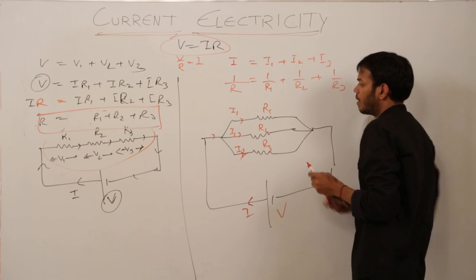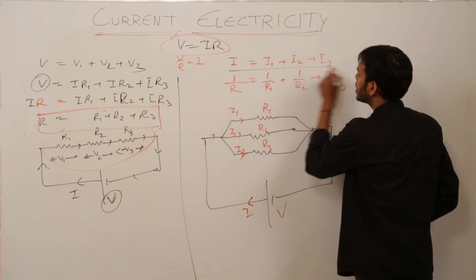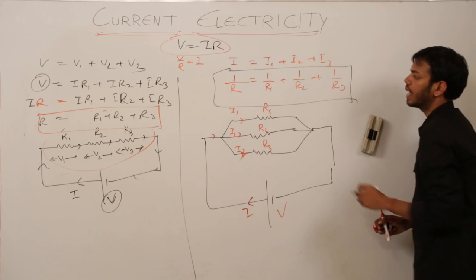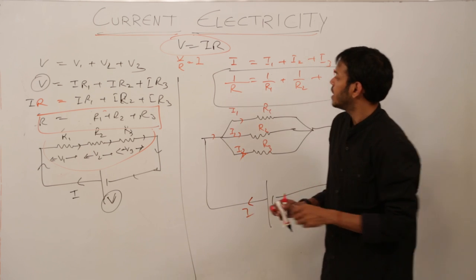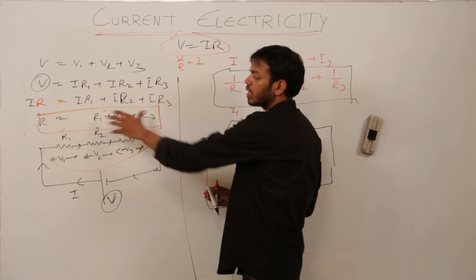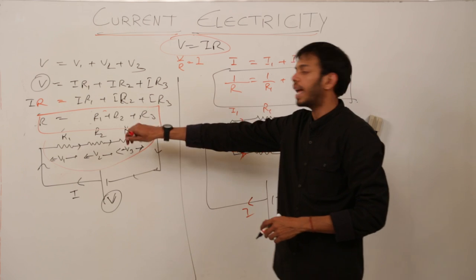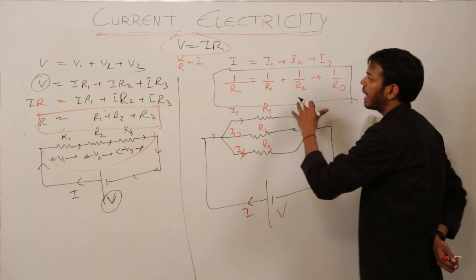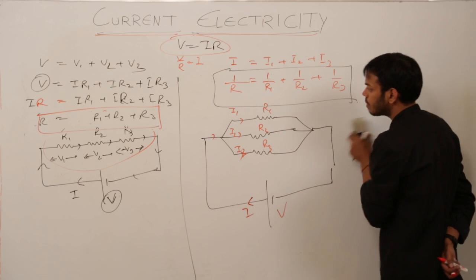So this is the formula for resistors added in parallel. The point of difference in the formulas: in series, you add them directly. In parallel combination, you take the inverse and then add it up.